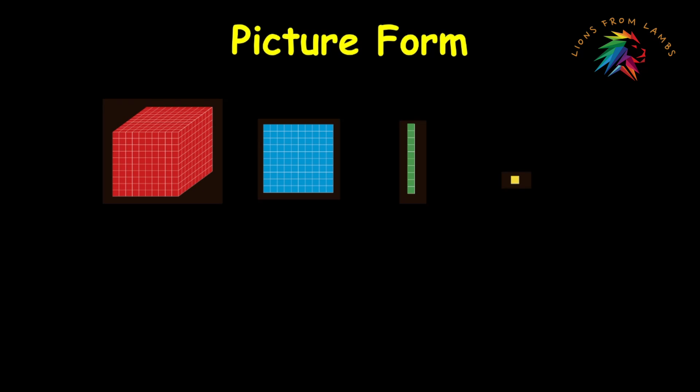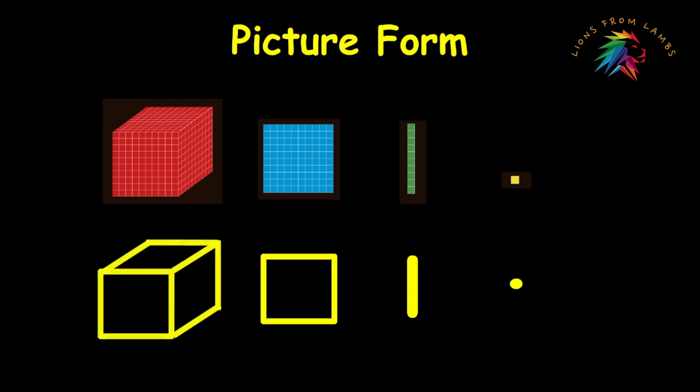So when we want to convert this to picture form, in place of the units, we're going to simply use a dot or dots to represent what the digit is in the ones place. For the tens place, instead of the rod, we'll just draw a short line. For the hundreds, instead of the flat, we'll just draw a square. And then for the thousands, if needed, we will just draw a simple cube.